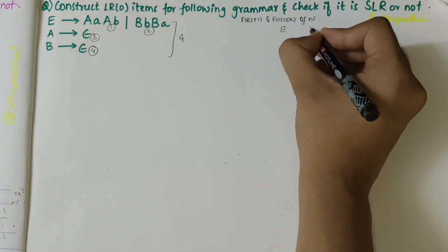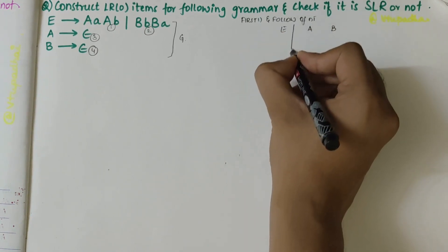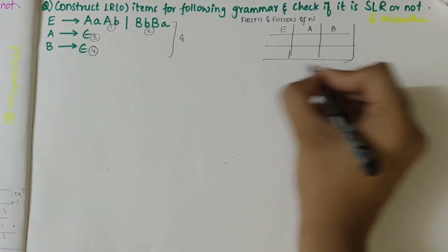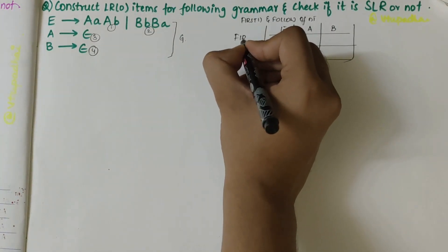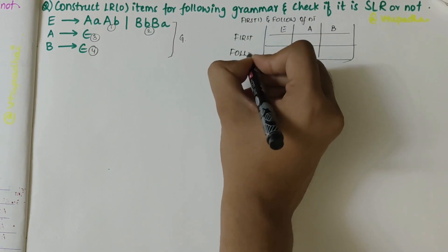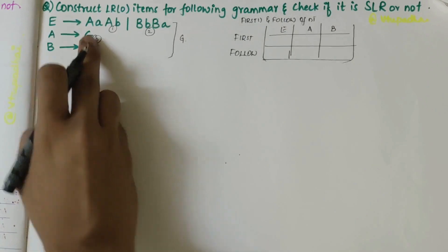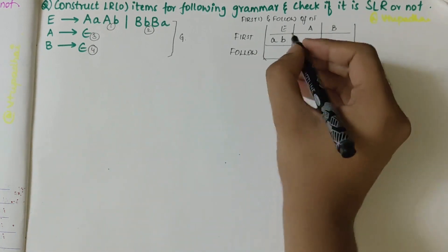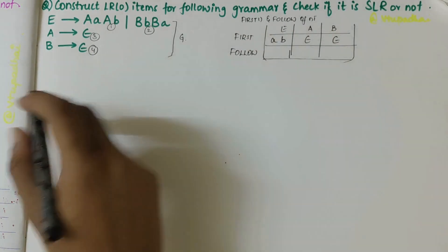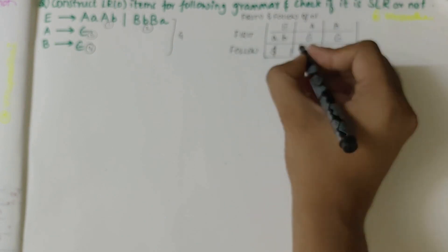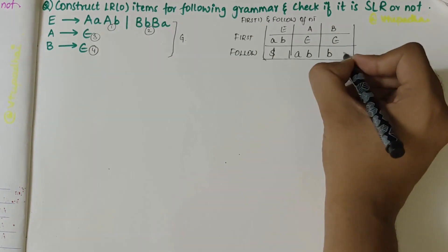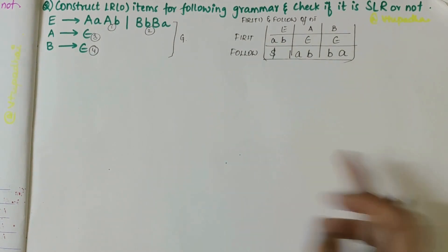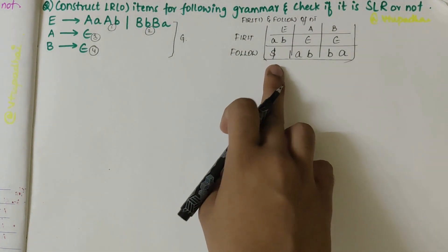So constructing first and follow — I write E, A, B here. First of E is {a, b}. First of capital A is epsilon. Capital B is also epsilon. Follow of E is {$}. Follow of A is {a, b} and follow of B is {b, a}. If you've watched my previous videos you'll understand how to find first and follow — I've explained the algorithm and all the steps clearly.